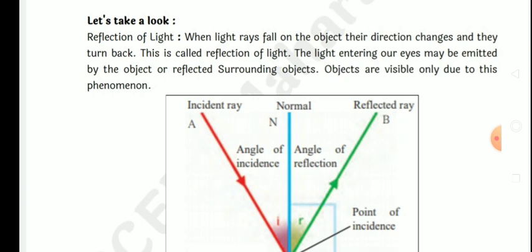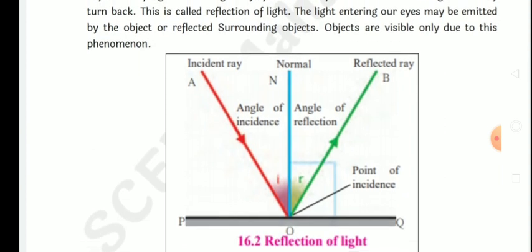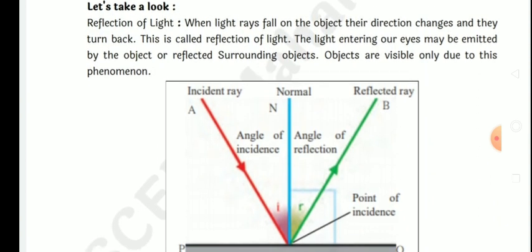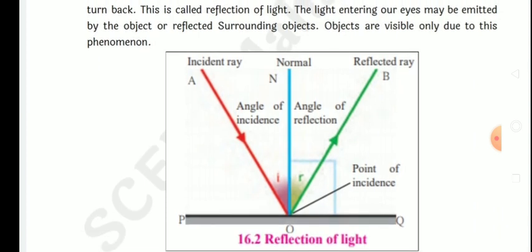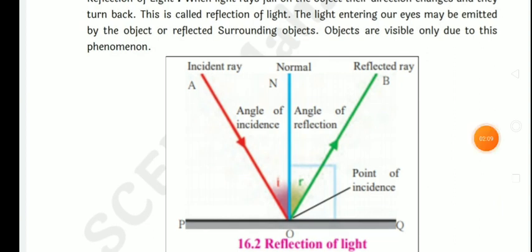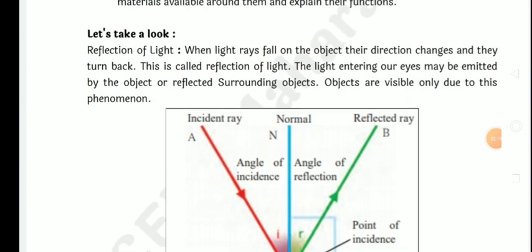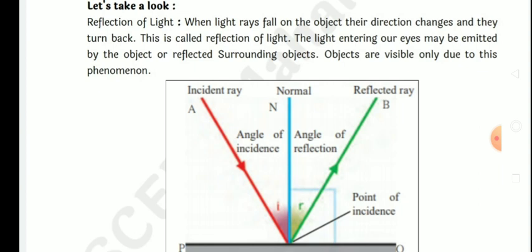Reflection of light: when light falls on the mirror — P and Q is the mirror in this diagram. When light rays fall on the object, their direction changes and they turn back. This is called reflection of light.